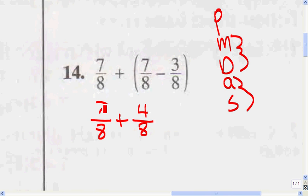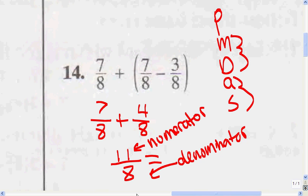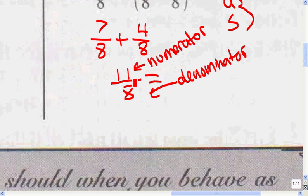Now we're going to add: what's 7 plus 4? 11 over 8, because 7 plus 4 equals 11. Now whenever the numerator is bigger than the denominator, it's called an improper fraction. So you have to turn this improper fraction into a mixed number.